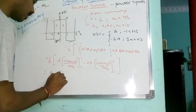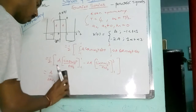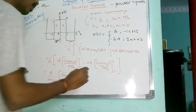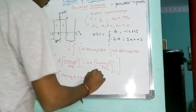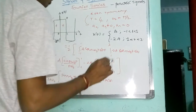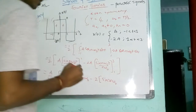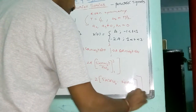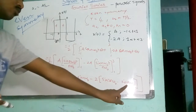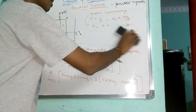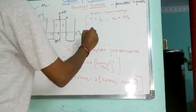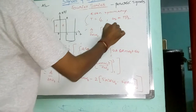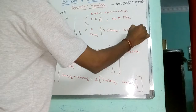This is sin N omega 0 T, plus 2 sin N omega 0 T. So overall I will get: A by 2 N omega 0 into plus 2, plus 2 gives me plus 4 sin N omega 0 T, minus 2 sin 3N omega 0 T. I am going to substitute omega 0 as pi by 2.